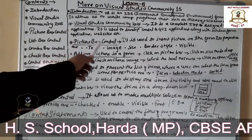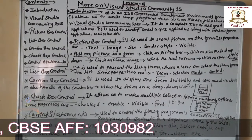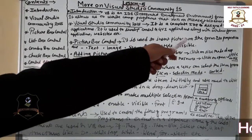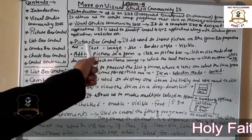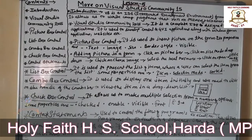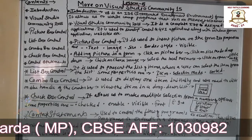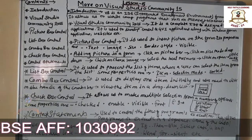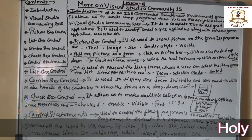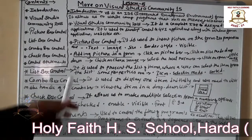The first topic is Picture Box control. It is used to insert a picture on the form. It displays a rectangular boundary that highlights the area to be covered by the image. If no image is assigned, it does not display any picture.